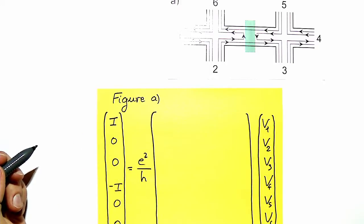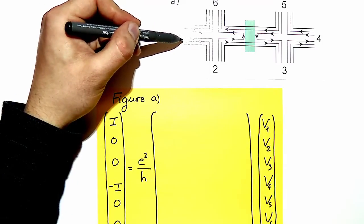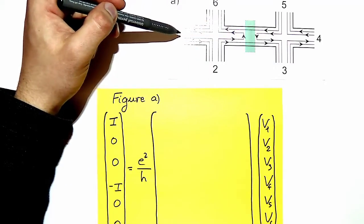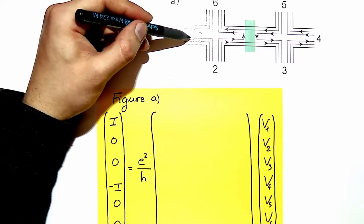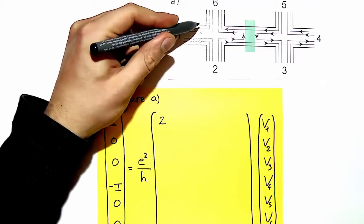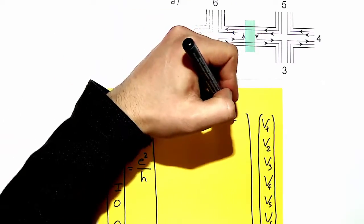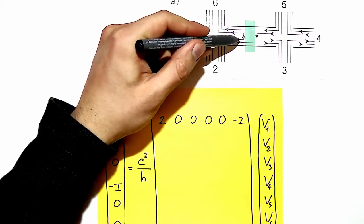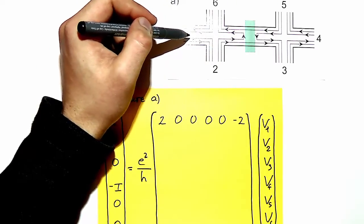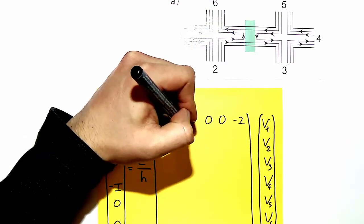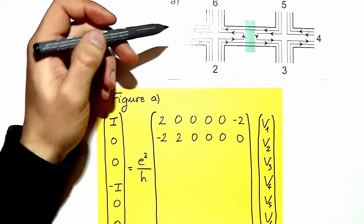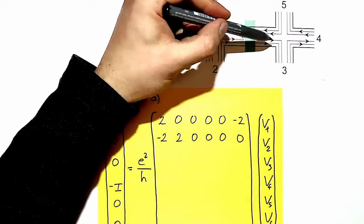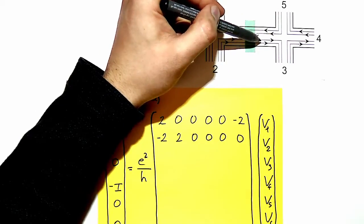To find the elements of the transmission matrix, we count how many modes are transmitted from each contact and how many modes are transmitted from other contacts into the contact we are considering. At contact 1 we have two modes leaving, and two are transmitted from contact 6. Contact 2 supports two modes, and two are incoming from contact 1. At contact 3 the situation is different: one mode transmitted from contact 2 is reflected into contact 6, so that only one mode is incoming from 2, and we also have one incoming from 5, and two leaving.